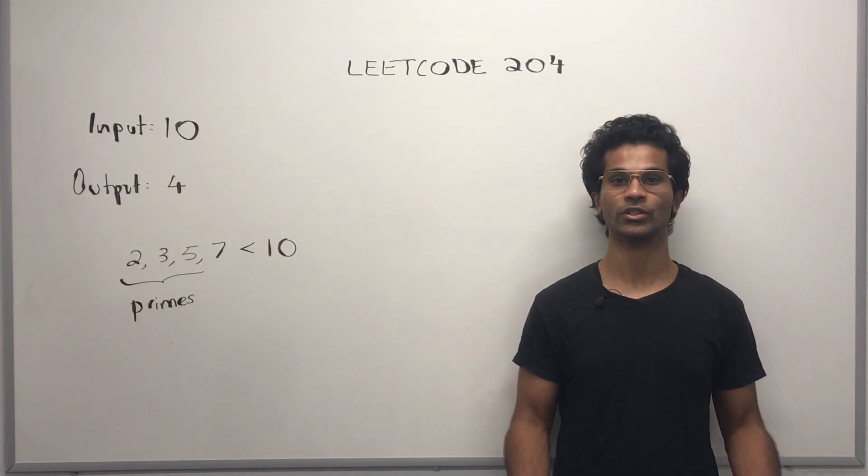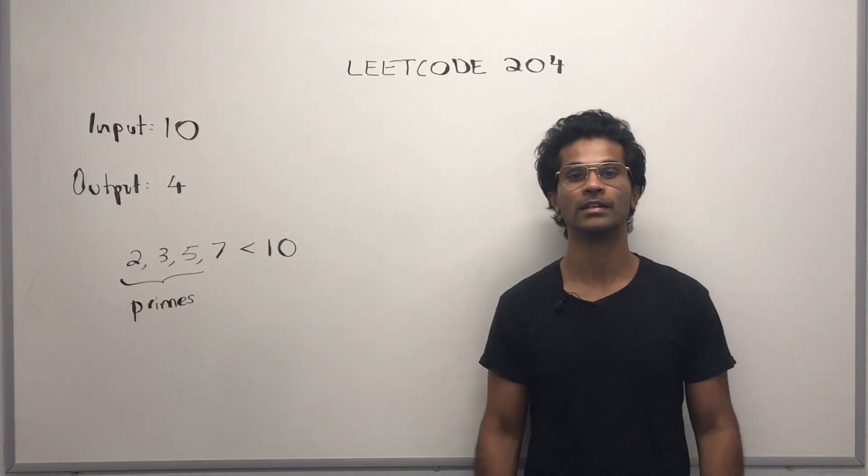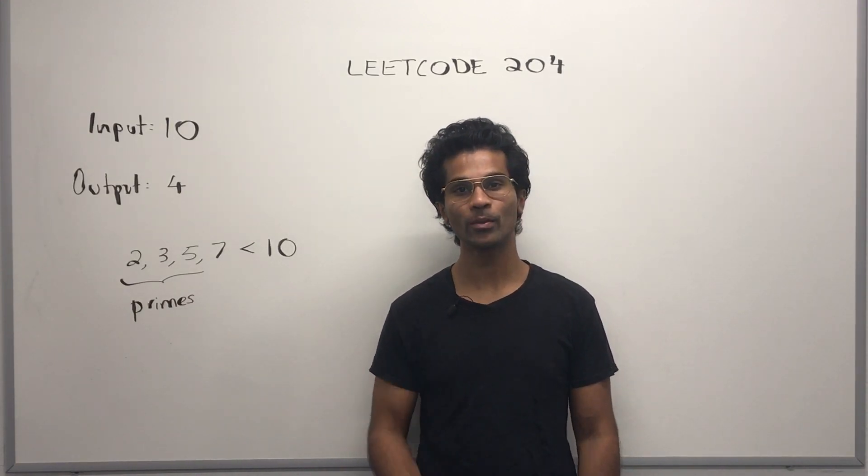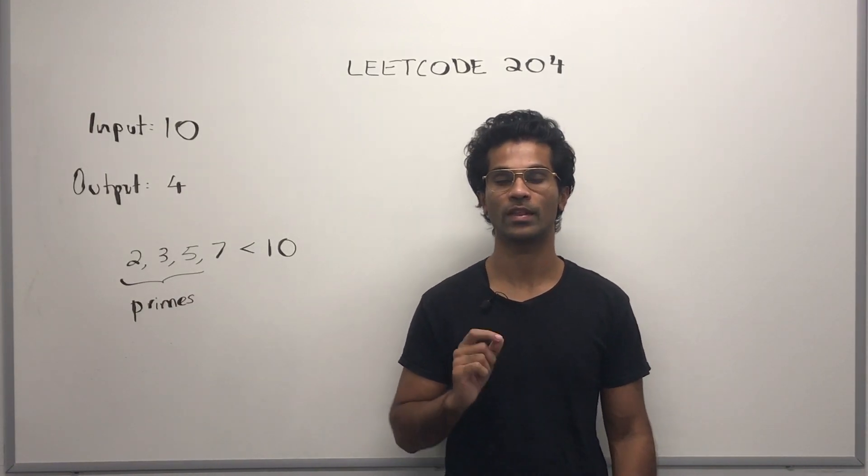So the input is going to be an integer n, and the output is going to be another integer. We have to count all the primes that are smaller than the input integer.